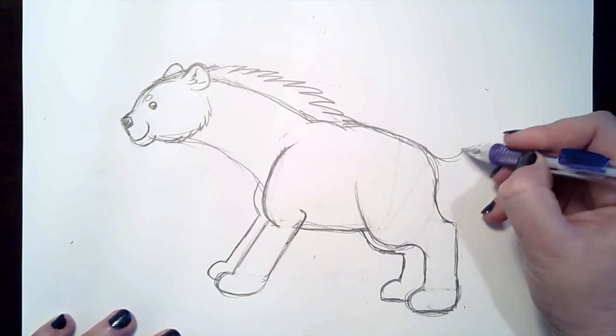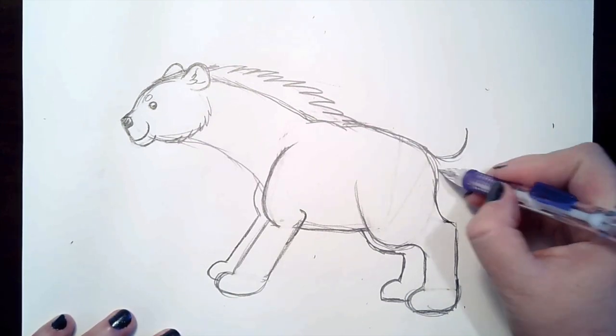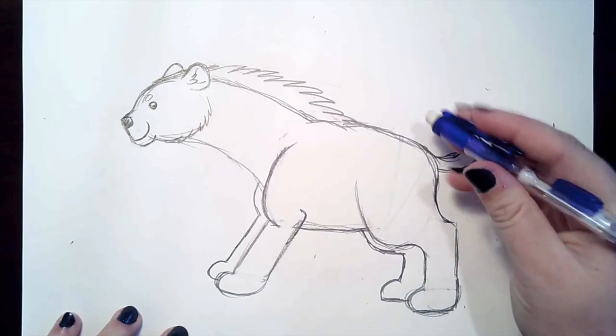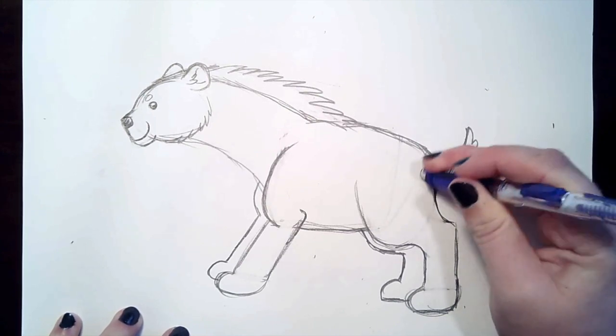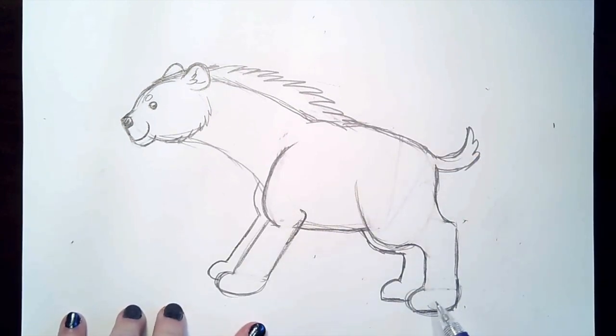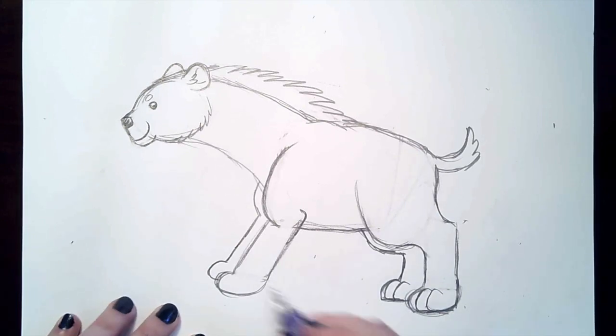And then we're going to go ahead and add a little tail. You can make a line that goes up and make some grassy shapes on the end of it. And we can also get rid of the line that connects the tail to that back leg. For the paws, we're going to go ahead and add in some toes. So we're just going to stay inside of that oval shape we made and make some curved lines, staying inside of that oval shape.